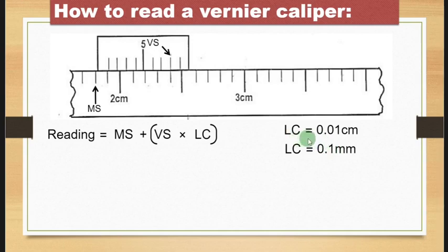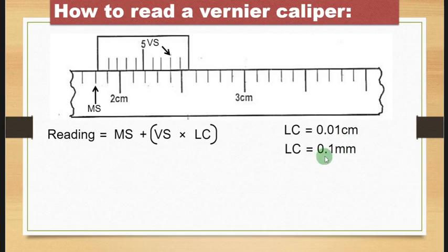These are very important: the least count (LC) is the smallest value or quantity an instrument can measure accurately. As far as the Vernier caliper is concerned, it is able to measure length accurately up to 0.01 centimeters or 0.1 millimeters. Now let's see how we can read this Vernier caliper with this background information.